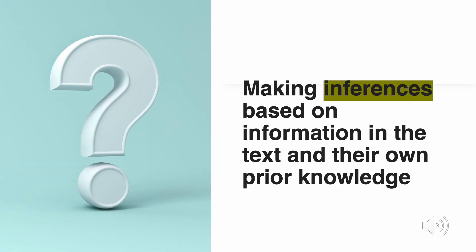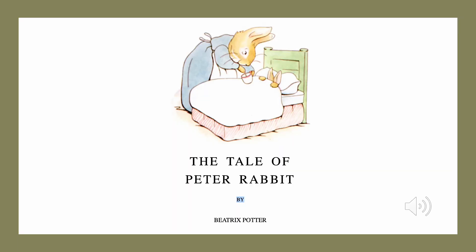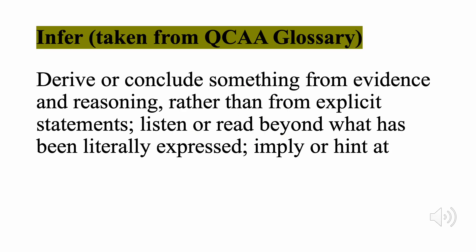The fourth strategy is making inferences based on information in the text and their own prior knowledge. The teacher might read The Tale of Peter Rabbit by Beatrix Potter aloud to the class; alternatively, the students might read it themselves or have an immersive reader on their laptop to read it to them. It's important to define the cognitive verbs as a teacher to ensure that the content descriptions are being accurately taught to the students.